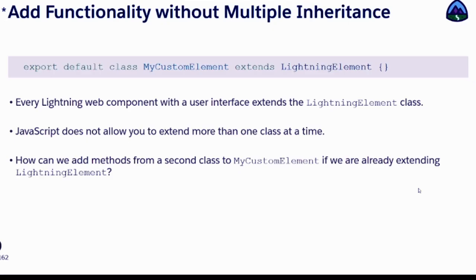Another concept we are going to learn here: multiple inheritance is not allowed in various languages, and the same applies to JavaScript. Your component class can only extend one class, which is LightningElement, and that's why your component behaves like a lightning element. LightningElement does not provide any navigational feature, so if you need to navigate from your custom element to any other class or functionality, you will not be able to do it — you cannot add a navigation feature in the custom element.